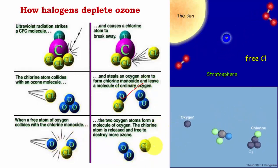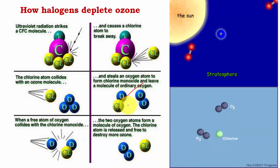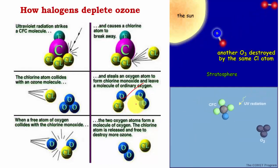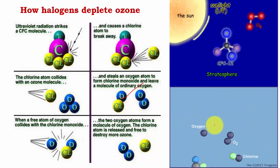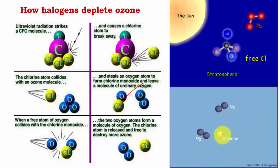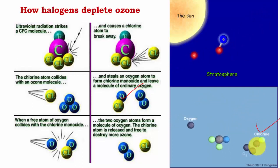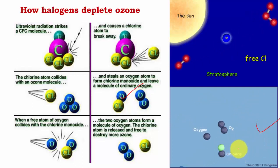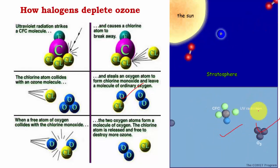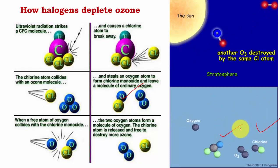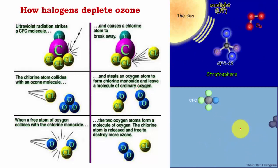This cycle repeats continuously — the free chlorine atom keeps destroying ozone molecules for a very long period. As shown in the animation, a free chlorine atom peels an oxygen atom from an ozone molecule, then becomes free again after depositing that oxygen, ready to attack another ozone molecule. This is essentially an infinite process, making one chlorine atom extremely devastating for the ozone layer.